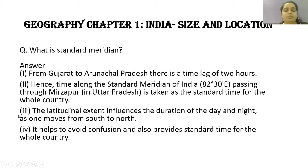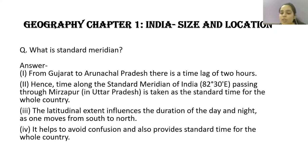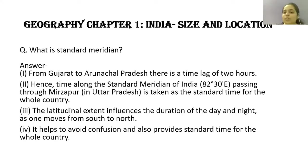A common exam question: What is Standard Meridian? From Gujarat to Arunachal Pradesh, there is a time lag of 2 hours. Hence, the time along the Standard Meridian of India — that is 82 degrees 30 minutes East — passing through Mirzapur in Uttar Pradesh, is taken as the standard time for the whole country.